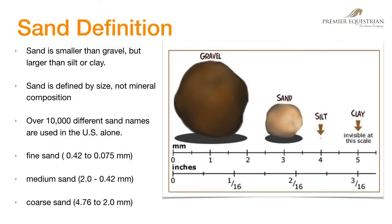Sand definition. Sand is a general term for broken down granules of rock. It only pertains to size. Sand can have many different minerals or even organic matters. How they define sand is by its size only.